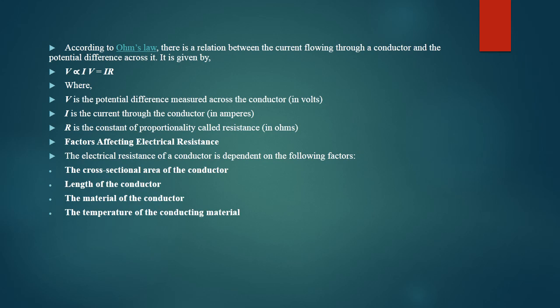The factors affecting electrical resistance are important. The obstruction caused by the conductor correlates with these parameters: the cross-sectional area of the conductor, the length of the conductor, the material of the conductor, and the external parameter — temperature of the conducting material. The cross-sectional area is inversely proportional to the electrical resistance. Length is directly proportional to resistance. If the temperature changes, there is also a change in the value of resistance.